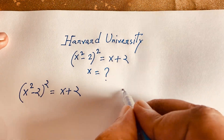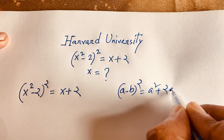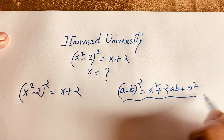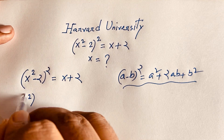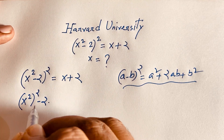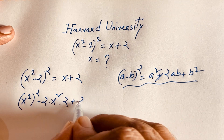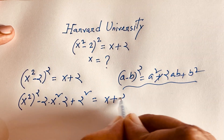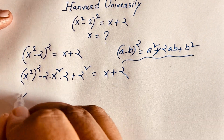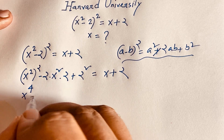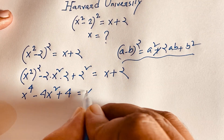We know that (a - b)² = a² - 2ab + b². According to this identity, this expression becomes (x²)² - 2 times x² times 2 + 2² = x + 2. So that gives us x⁴ - 4x² + 4 = x + 2.